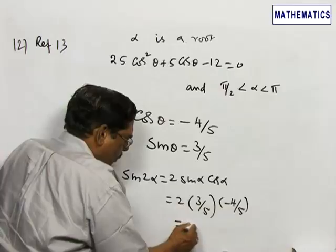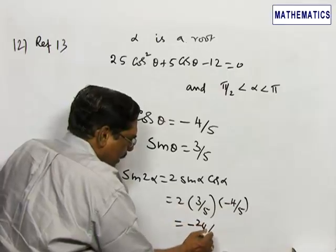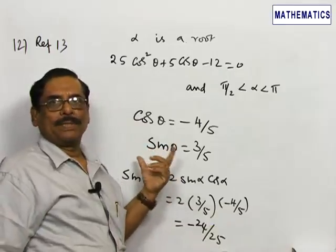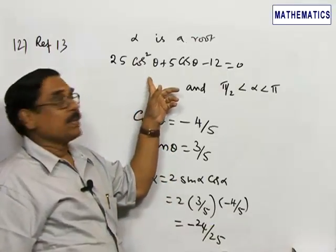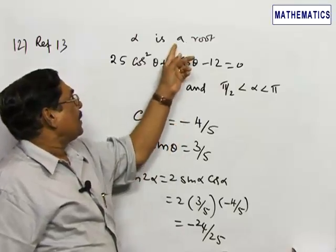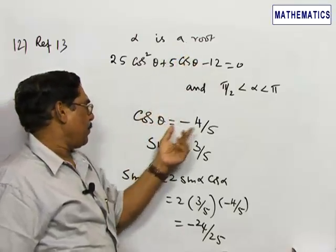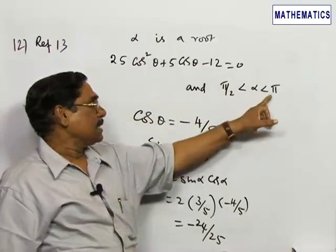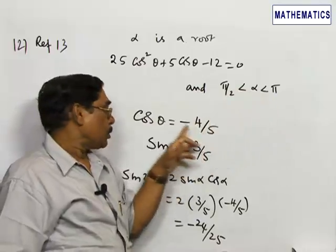Now why this problem is given: it is simply a quadratic equation problem, and you get the value of cos theta. Because alpha is a root, you may call it cos alpha. And sine alpha, because alpha lies in the second quadrant, cos alpha should be negative.